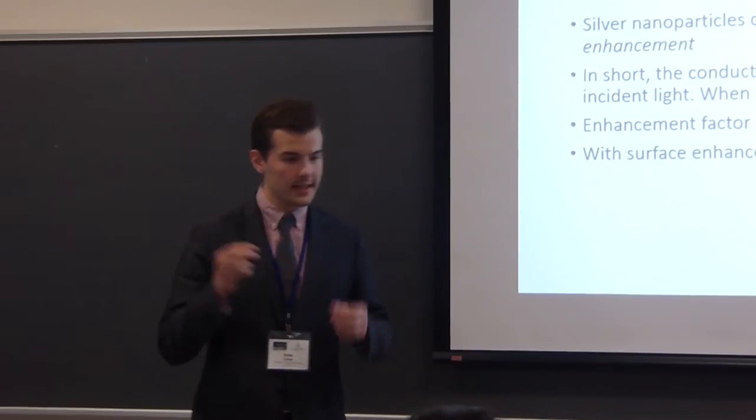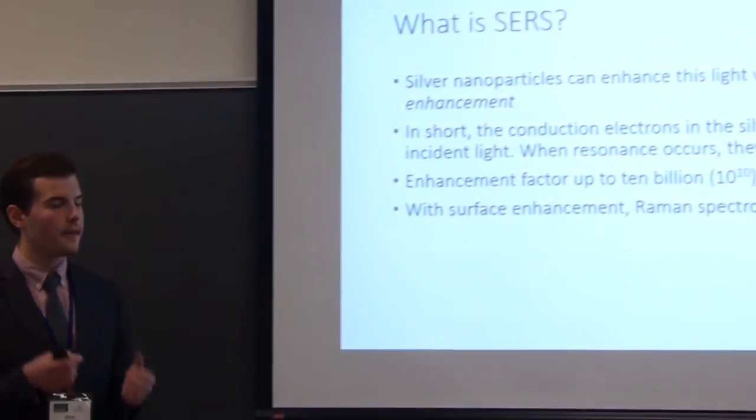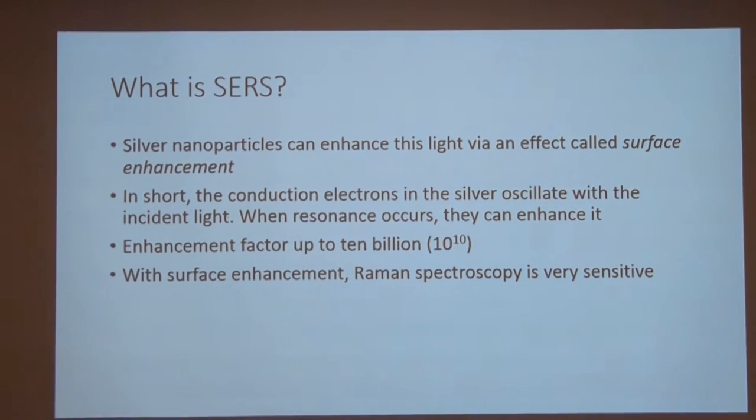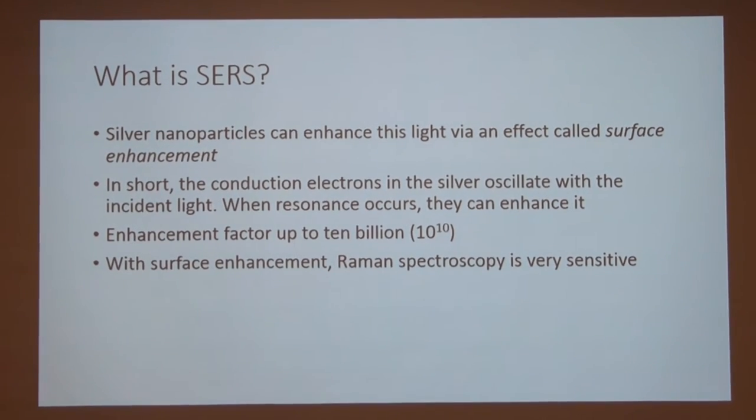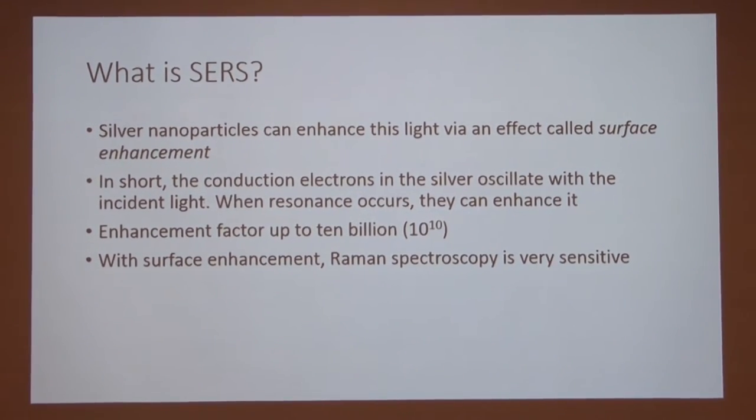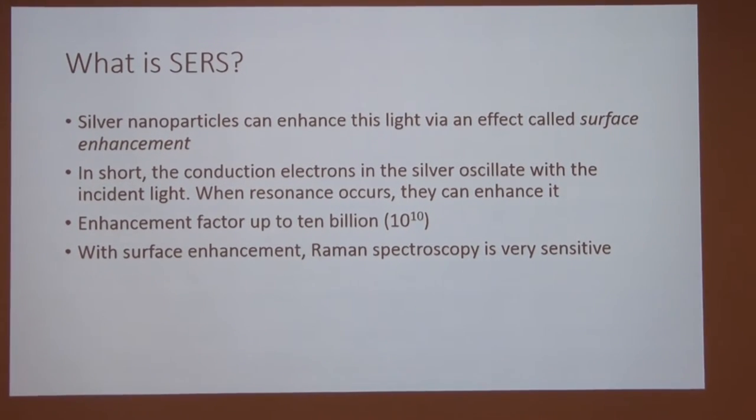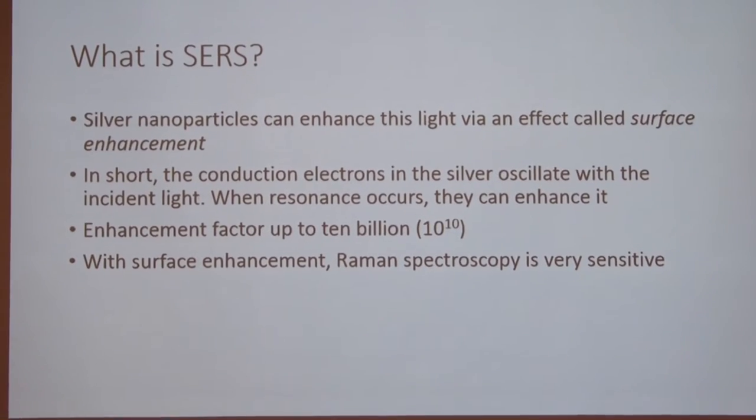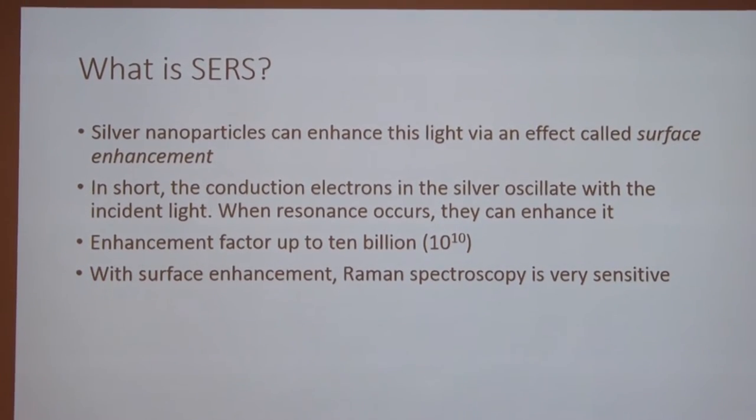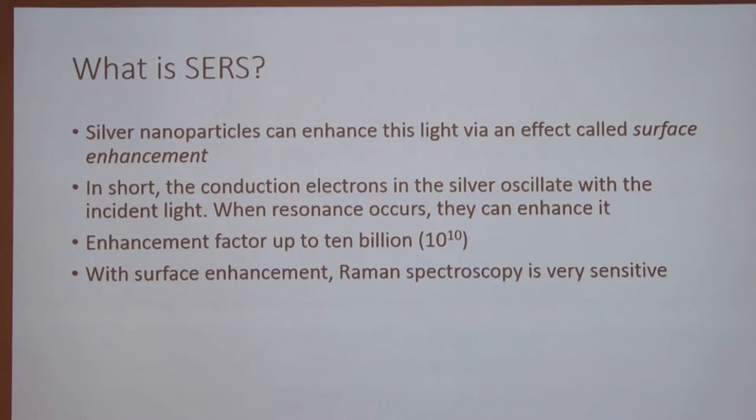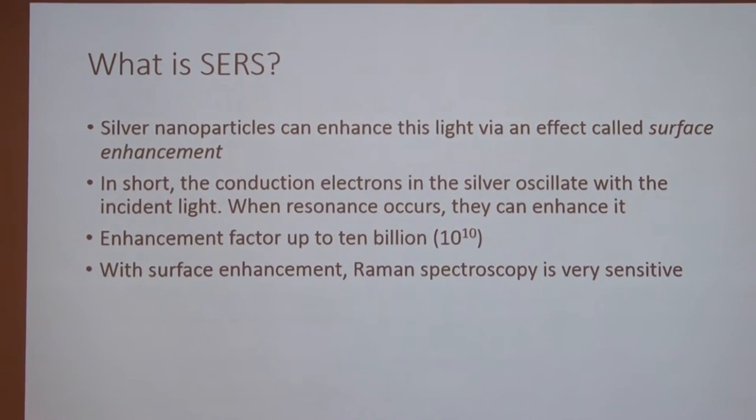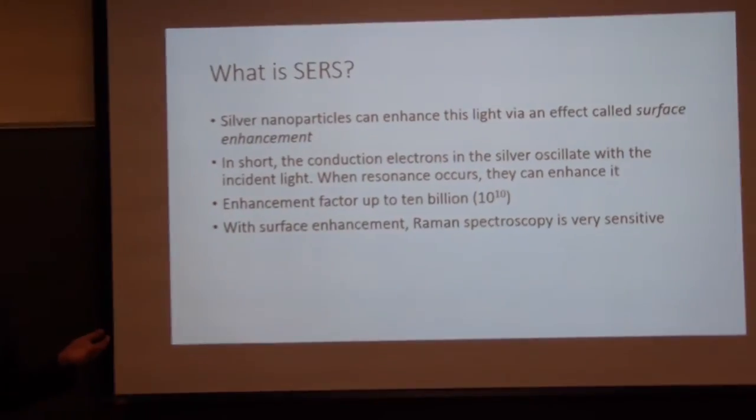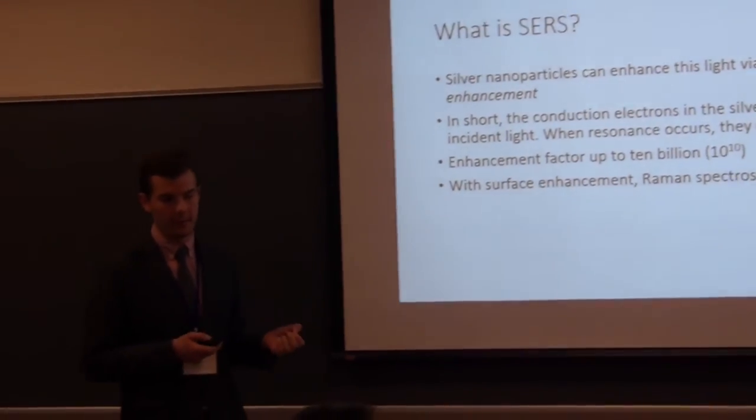If we combine these silver nanoparticles and their surface enhancement with Raman spectroscopy, we get something called surface enhanced Raman spectroscopy, or SERS. And, what that does is it takes a weak effect, and it makes it extremely sensitive. So, that's where you get that single molecule detection capability. Those particles, if you hit the resonance frequency, can get you up to a factor of 10 to the 10th, which is 10 billion times more light than you had before.